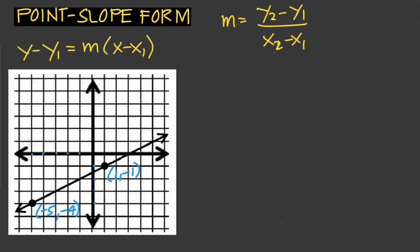Let's solve some problems given the graphs. We're going to write an equation in point-slope form given a graph. Two points are indicated on the graph. We've already learned from the previous video about the point-slope form, and how to solve for the slope using the slope formula.